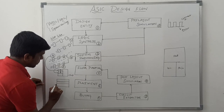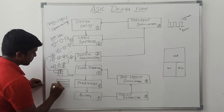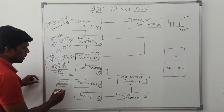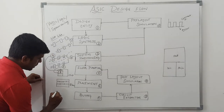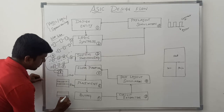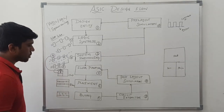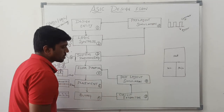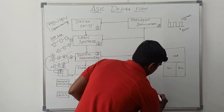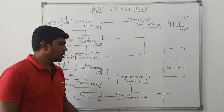Next comes placement. Placement means fixing the exact position of the components. In block A, which has three logic cells, the corresponding components are placed at their exact positions — that is called placement. Then comes routing, which means making the interconnections between logic cells and blocks. After routing comes circuit extraction, which involves finding the resistance and capacitance between the interconnections.